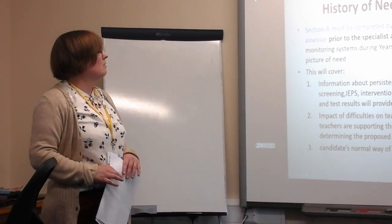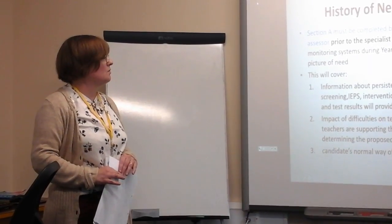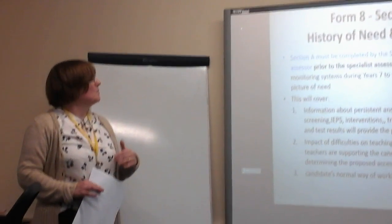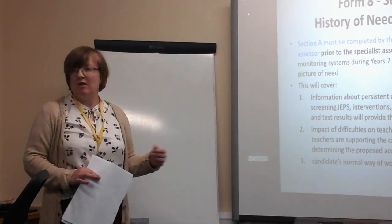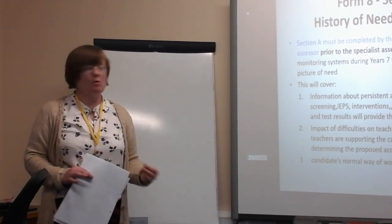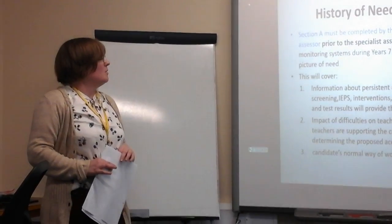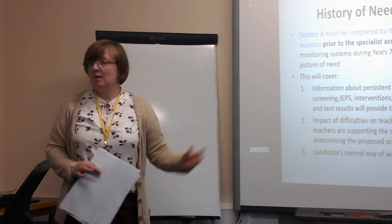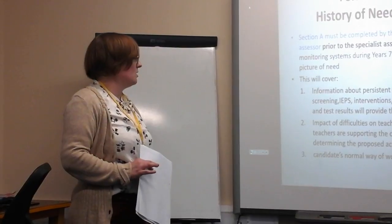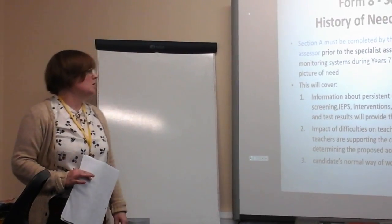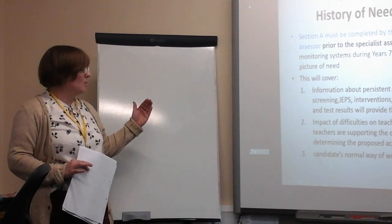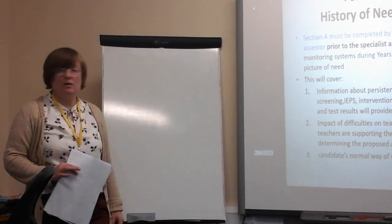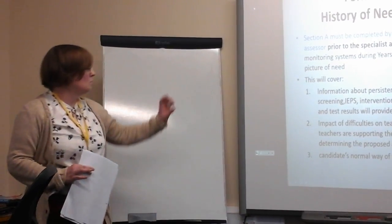Form 8 is the section that does need to be filled in and sent to JCQ to actually get your access arrangements. The first section needs to be completed by the SENCo, or if it is a specialist assessor, someone in the centre with the relevant knowledge. Ideally, between Year 7 and 9, evidence should be built up before filling in this form, so that the form should then be fairly straightforward. Information about their challenges and difficulties, anything prior to coming to your school, interventions, tracking, observations, and any form of diagnosis should all be included in the first section.